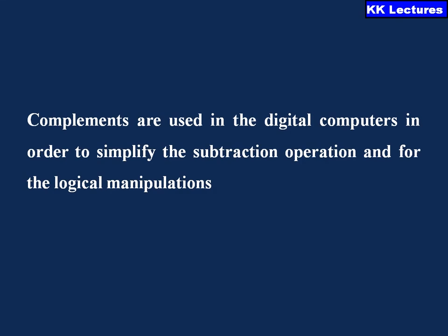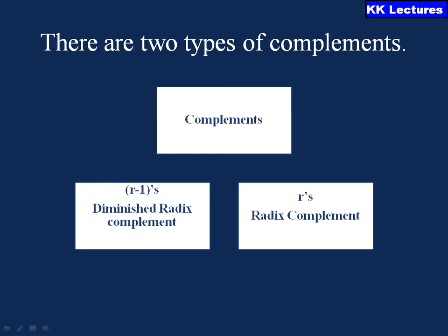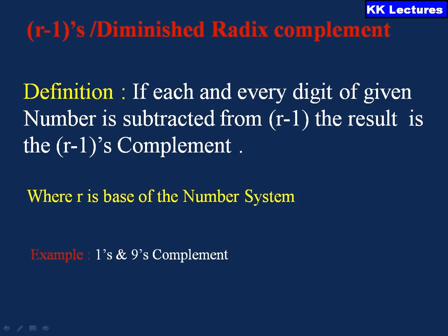These complements are used in digital computers in order to simplify the subtraction operation and further logical manipulation. There are mainly two types: the R minus 1's complement, which is also called the diminished radix complement, and the R's complement, which is called the radix complement.